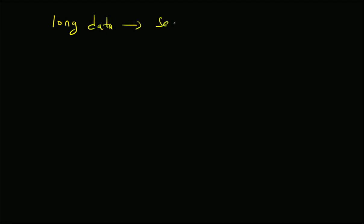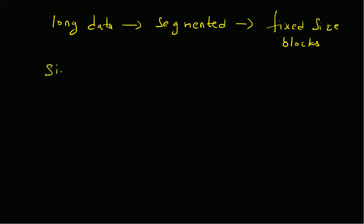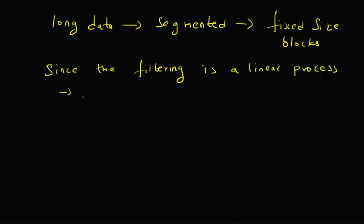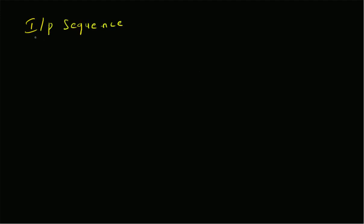What happens is the long data is first segmented into fixed-size blocks, and then the linear filter is applied. Since the filtering process is a linear process, we can actually do this segmentation and still get the correct output. This kind of segmented operation is feasible. So given the input sequence x(n), the first step is segmentation.